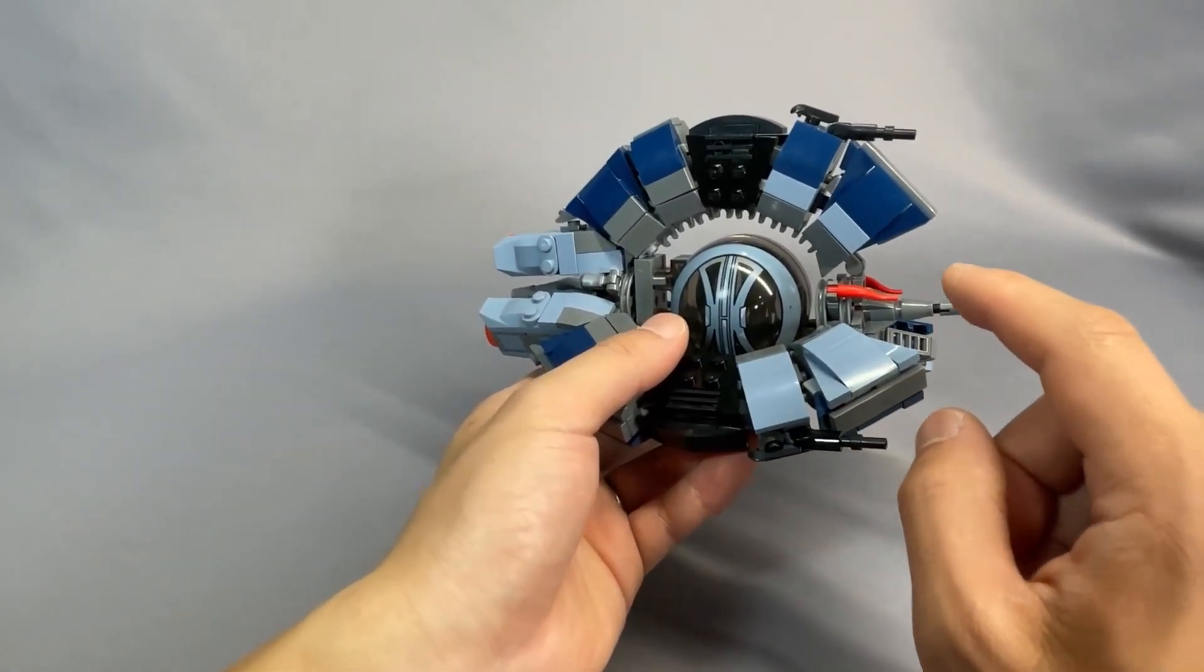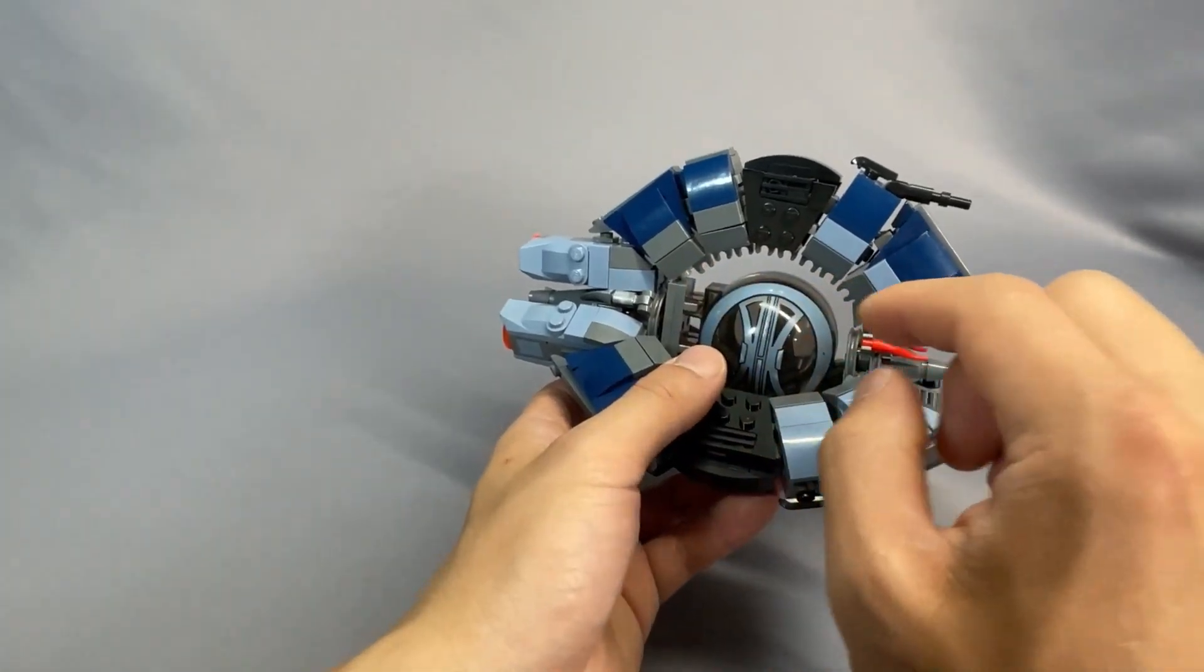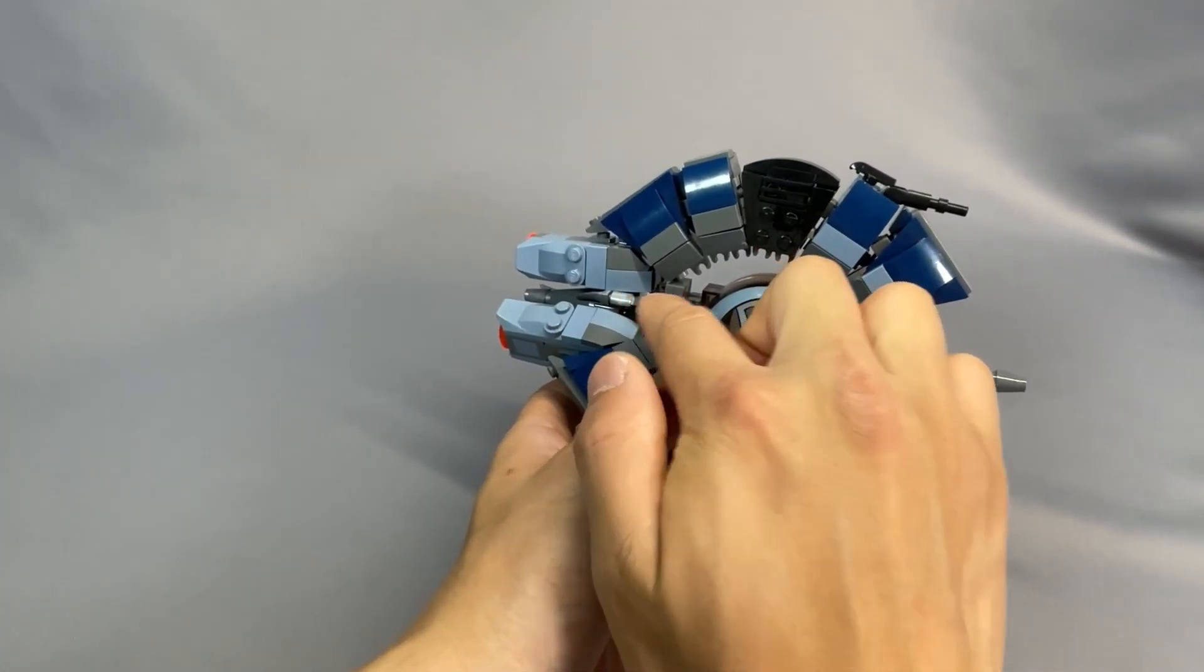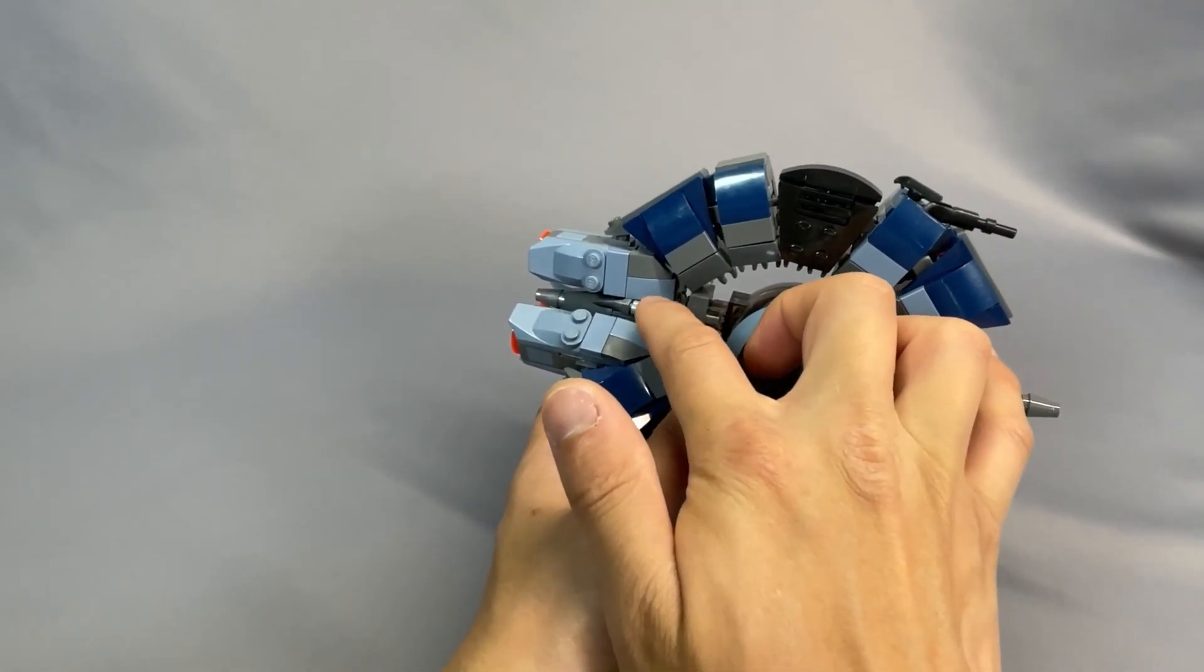So the way this is connected, you can see one of the clip and bar connections here, and the other one's kind of hidden back here. But basically you attach this end of the fin to a clip, to a bar rather, with a clip right there.